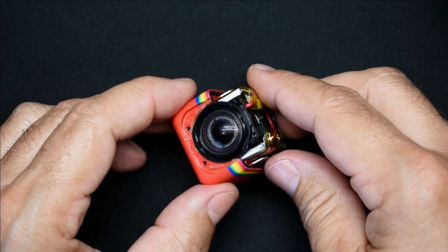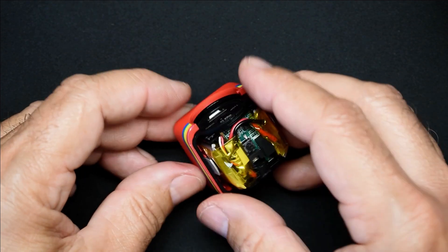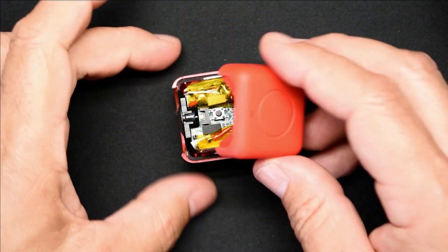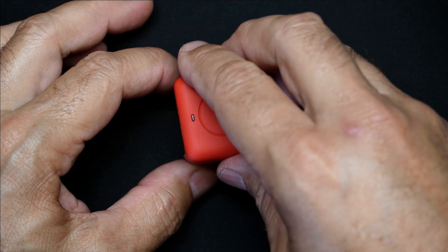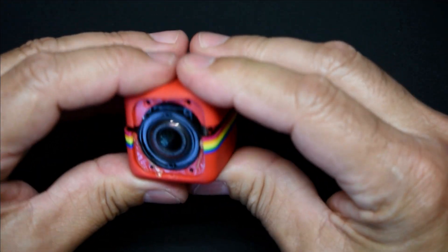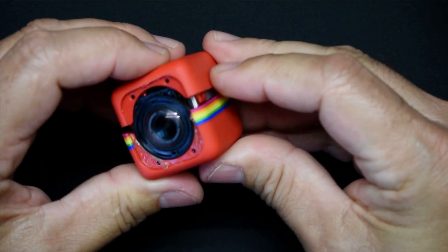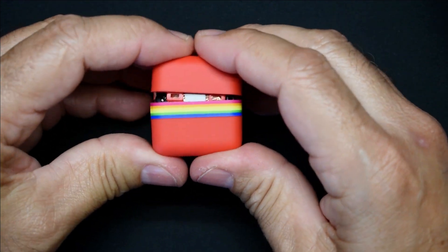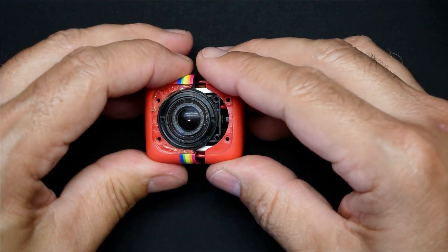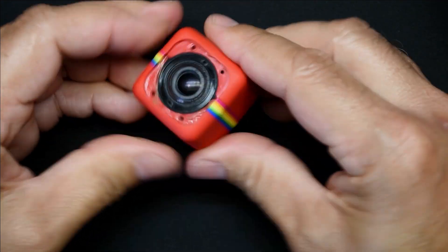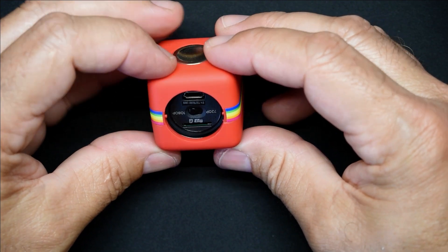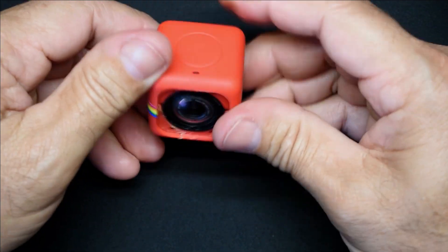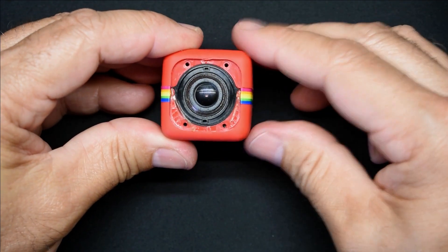Back inside, everything is seated perfectly. The gasket all the way around. The top should go on perfectly. That went together perfect. Snap together nicely. Let me put the four screws back in.